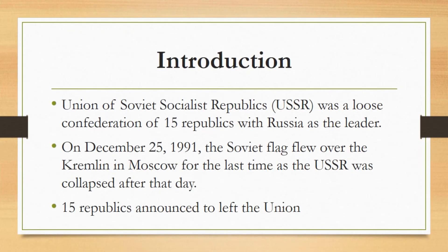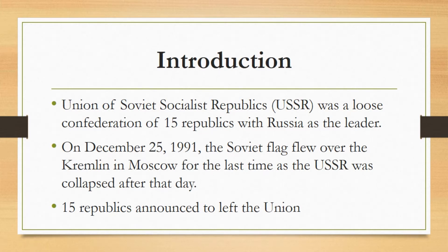The Union of Soviet Socialist Republics, that is USSR, was a loose confederation of 15 republics with Russia as the leader. USSR was a strong block with great control over global politics from 1922 to 1991, when it was disintegrated into smaller units. On December 25, 1991, the Soviet flag flew over the Kremlin in Moscow for the last time as the USSR collapsed. After that day, 15 republics announced they were leaving the union, ending the Cold War and the bipolar world order.